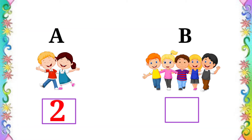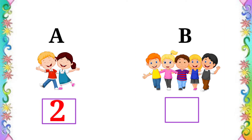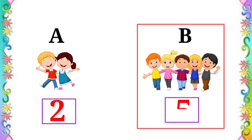Then let's count B set. 1, 2, 3, 4, 5. B set has 5 children.